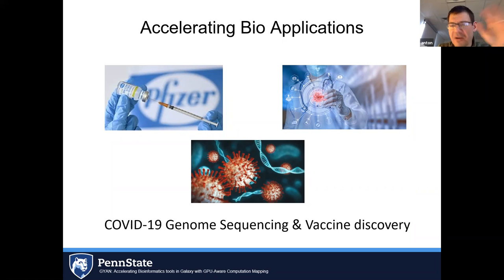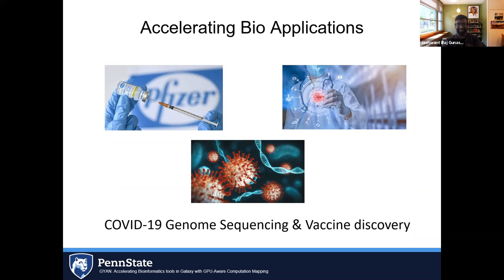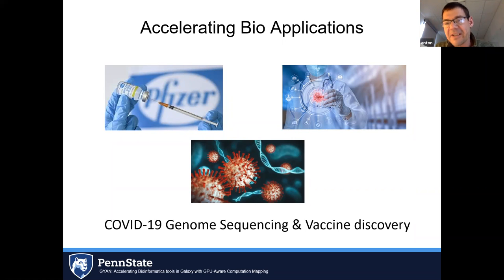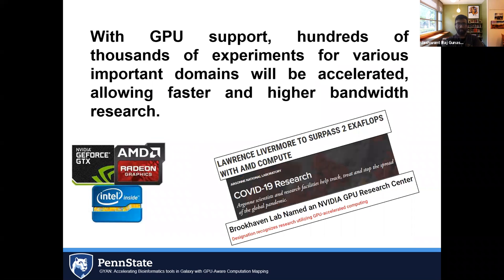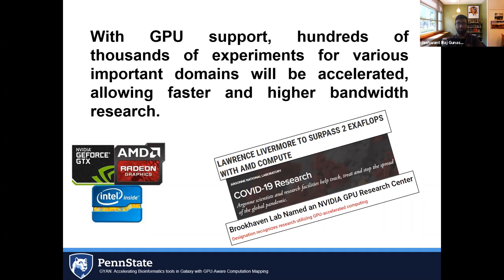Galaxy is a widely used software framework to run a wide variety of applications ranging from computational chemistry to genomic sequencing to bioinformatics. Key applications that benefit include genomic sequencing, drug discovery, and vaccine discovery. Even with COVID-19, a lot of sequencing and vaccine discovery has been accelerated using software frameworks like Galaxy. GPUs are one of the key factors — with GPU support these applications can run much faster.